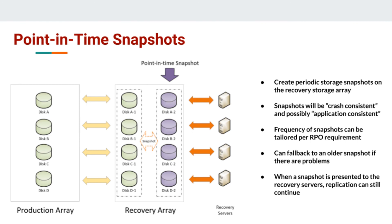What this does is allow you to tailor the frequency of your snapshots to meet whatever the RPO requirements are. So if the business determines that the maximum data loss they can withstand is 15 minutes worth of data, then you're going to want to make sure that you're taking your snapshots in 15-minute increments or less. Since you can have multiple snapshots, you can have one or more snapshots that you can fall back to in case your first snapshot is unusable or somehow corrupted.